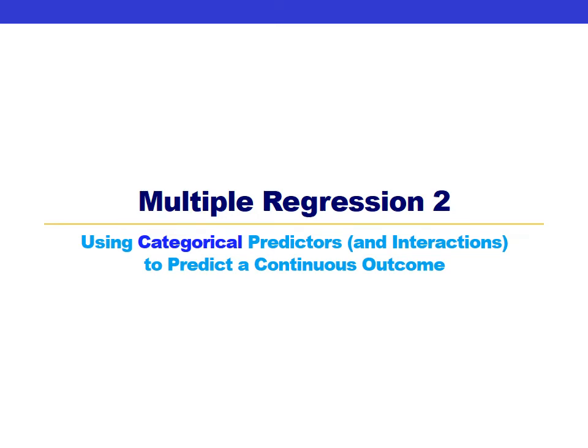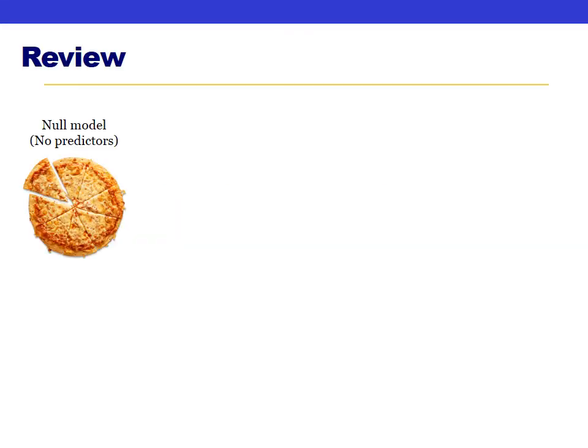Hi everybody and welcome to our second day of talking about multiple regression. Our goal for today is to start talking about how we can use multiple regression to test for moderation by testing for interactions between predictors. Specifically in this video we'll talk about how to test for an interaction between one categorical predictor and one continuous predictor when we're trying to predict a continuous outcome variable.